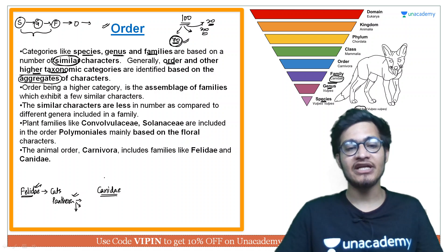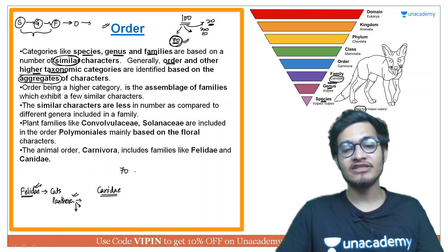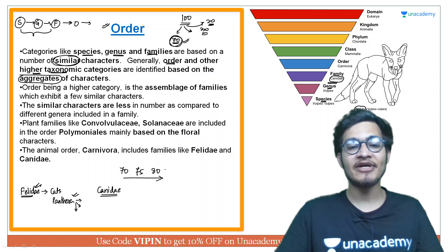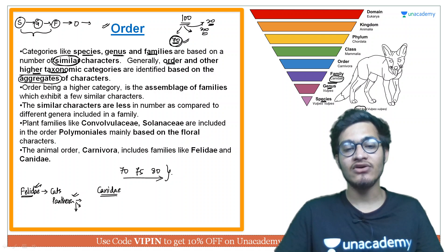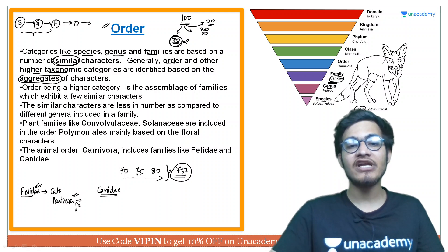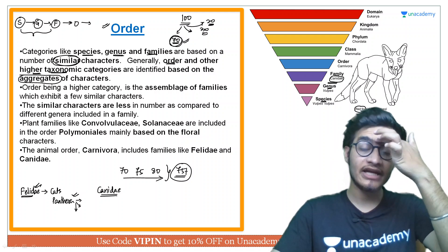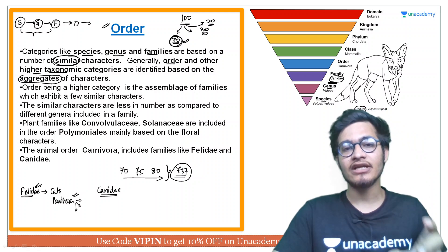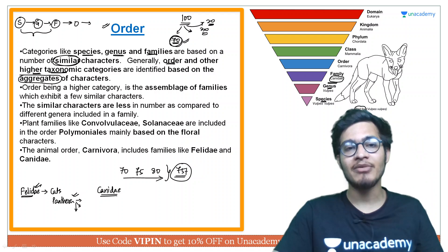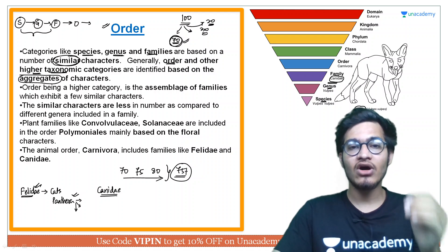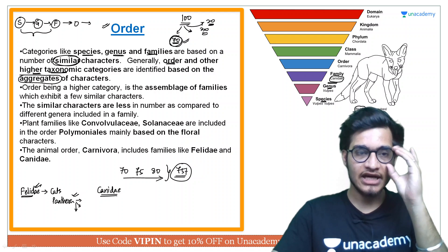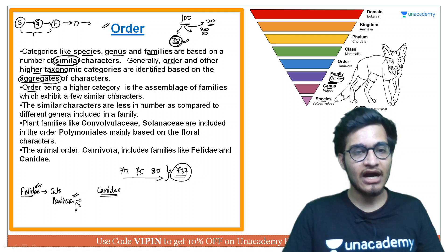Just like you calculate an aggregate percentage — you don't write semester-wise marks like 70%, 75%, 80% across three years of BSc. Instead you write the aggregate, say 75%. Similarly, you take an average of all characters and on the basis of that average you define which order an organism should be placed in.